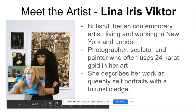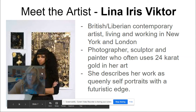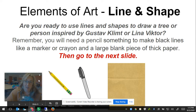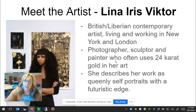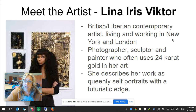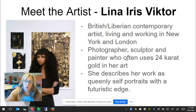Lena Iris Victor is a British — that means she's from England — and Liberian, from Liberia, Africa, contemporary artist, meaning she's living and working right now. She mostly works out of New York City and London, and she is both a photographer, a sculptor, and a painter who also uses gold in her art.